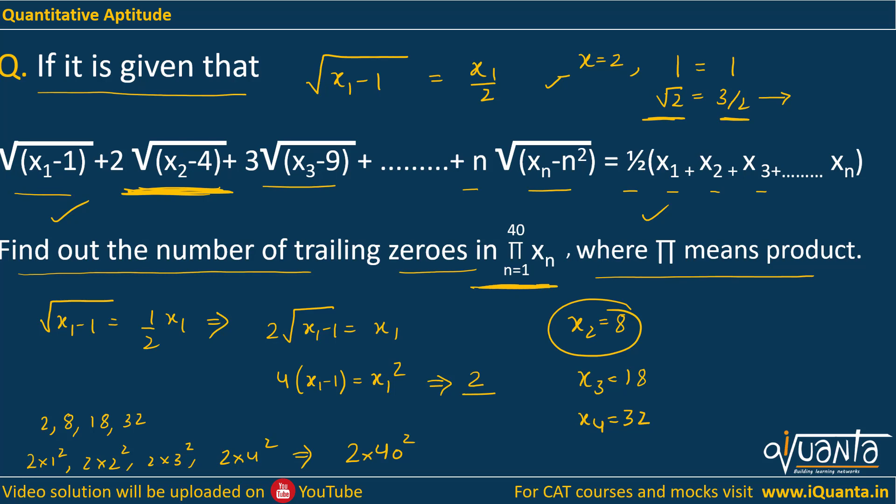When you multiply all of these terms, you will get 2 multiplied 40 times so 2⁴⁰, and then you will be multiplying 1²×2²×3² up till 40². So 1×2×3 up to 40 becomes 40 factorial. We will be getting (40!)².